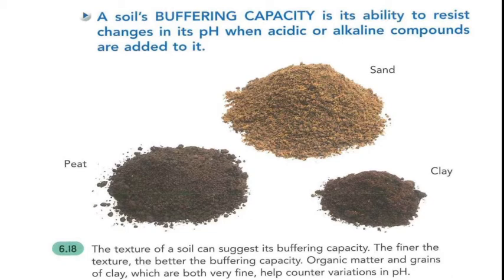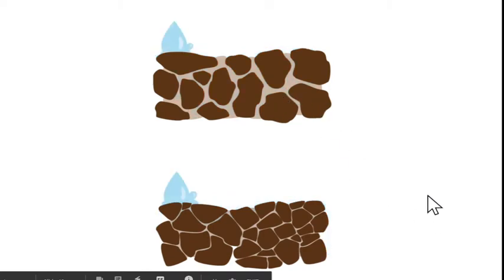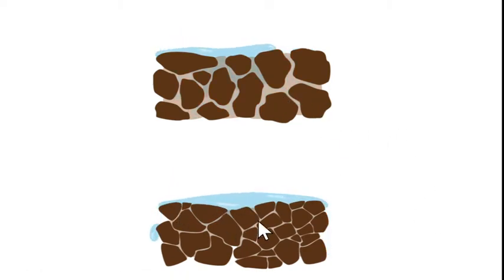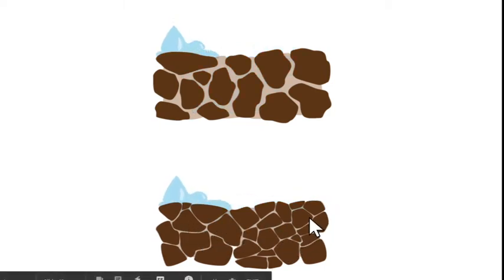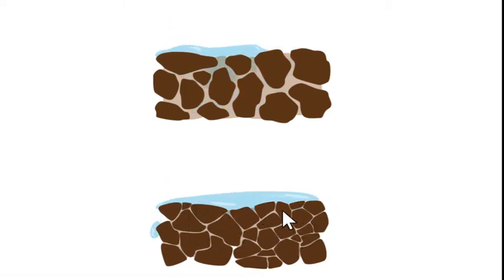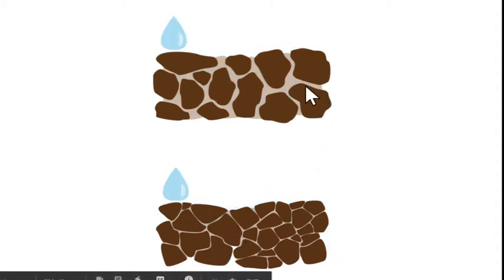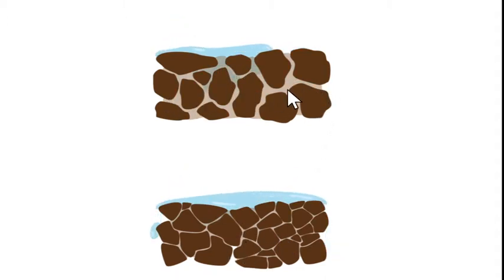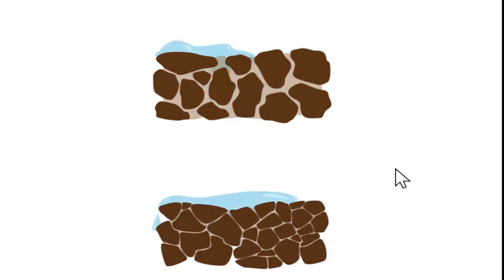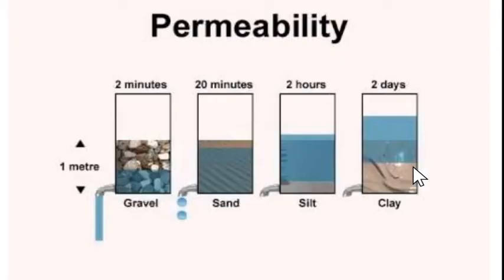The texture of soil can suggest its buffering capacity — the finer the texture, the better the buffering capacity. Organic matter like peat and grains of clay are both very fine, which helps counter variations in pH. In this diagram, the brown components represent clay, which can let water in but also lock it in. Beige throughout indicates sandy soil, which lets water infiltrate and leach out, drying the soil over time. You need the perfect balance between sand, clay, and peat.